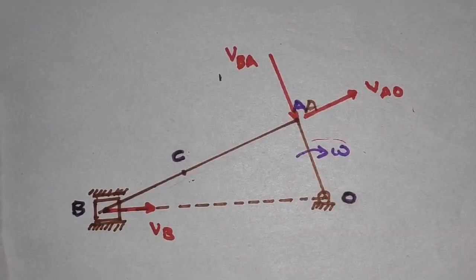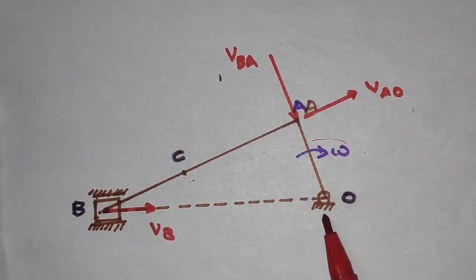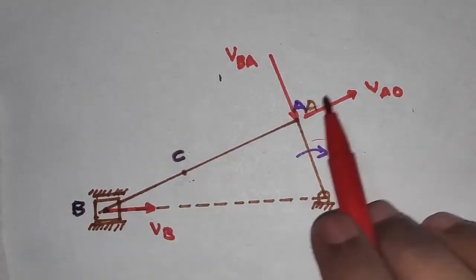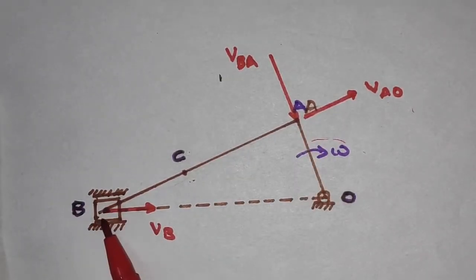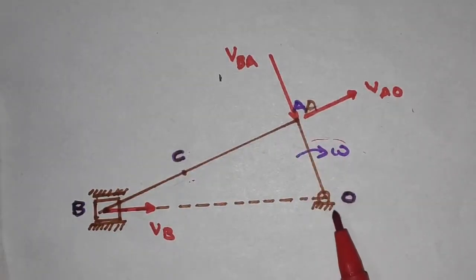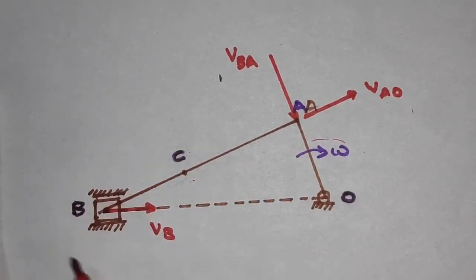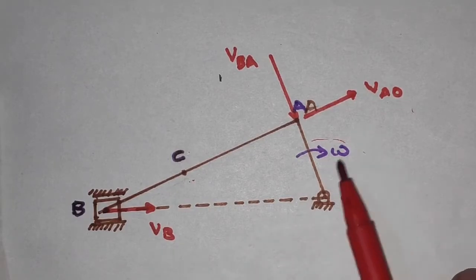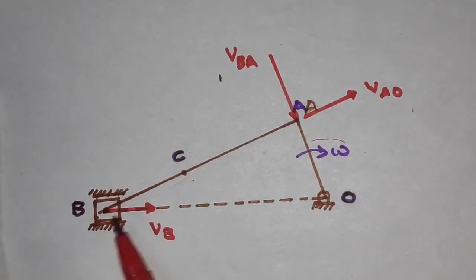Here we have the slider crank arrangement. The crank OA is pivoted to the fixed link at point O. We have AB, the connecting rod, which connects the crank and the slider at point B. The slider slides in the cylinder, which is a fixed link. The velocity components are VAO for crank OA, VBA for connecting rod BA, and VB for slider B. The crank and connecting rod have angular velocity, while the slider has a linear velocity component.